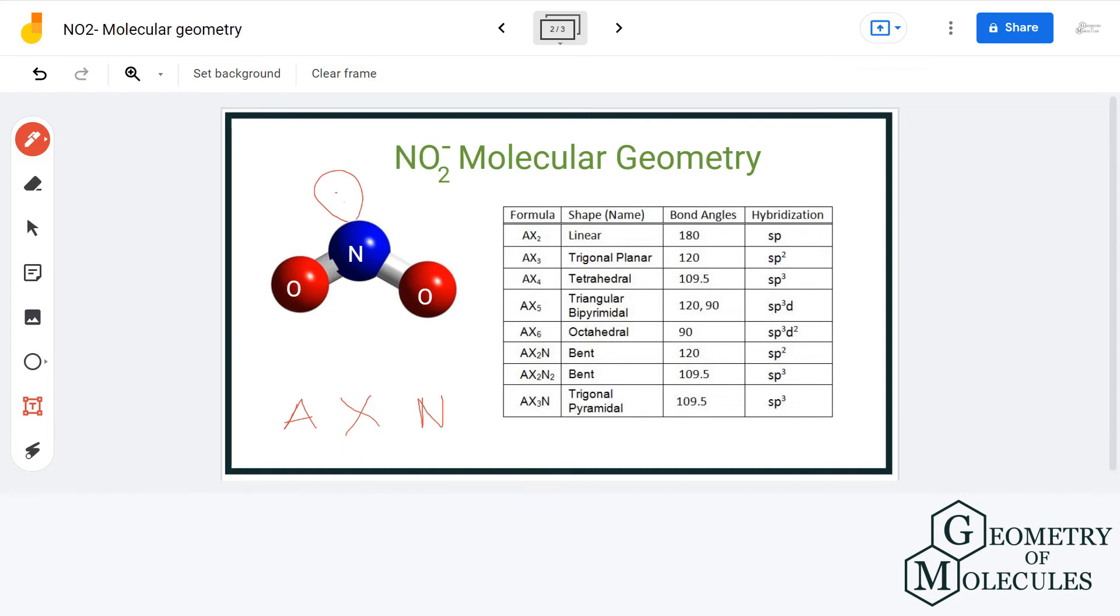Here, we have nitrogen as the central atom. There are two oxygen atoms attached to it and one lone pair of electrons. This gives us a general formula of AX2N.